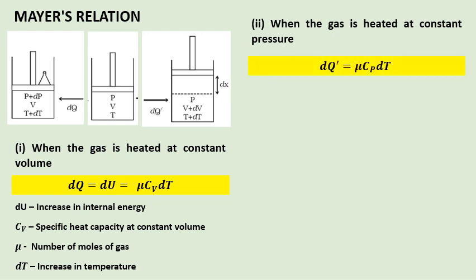So, the relation is dQ prime equals mu times Cp dT. Cp is the specific heat capacity of the gas at constant pressure.